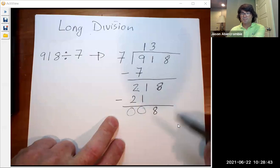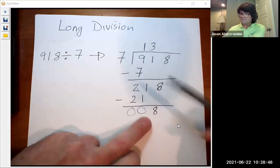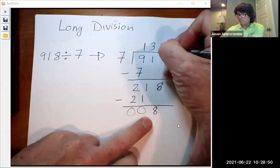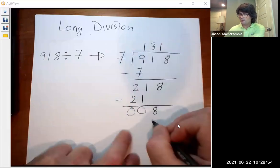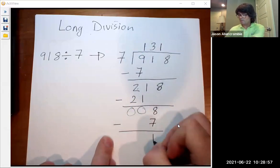And now we ask the question one more time. Does seven go into eight? Yes, it does. Seven goes into eight one time, so we write one. And we take the one times seven, write it right there, subtract and we get one.